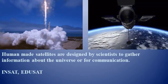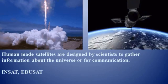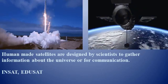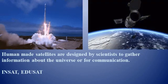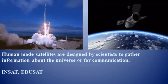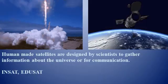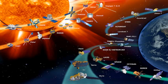There are two types of satellites: natural and human-made. Human-made satellites are artificial bodies designed by scientists to gather information about the universe or for communication. They are carried by a rocket and placed in orbit around the Earth. Some of the Indian satellites in space are INSAT, EDUSAT, etc. Different satellites are placed in Earth's orbit and are used for different purposes. Common types include Earth observation satellites, communication satellites, navigation satellites, weather satellites, and space telescopes.